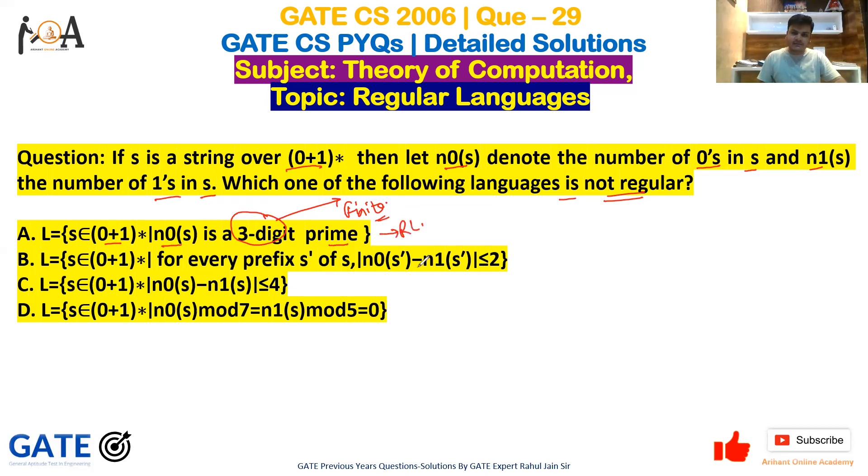So it is finite. If it is finite, it means it is a regular language. Now scan option B: for every prefix s' of s, |n0(s')-n1(s')|≤2. For every prefix of s, number of zeros minus number of ones should be less than or equal to two.